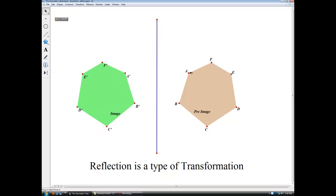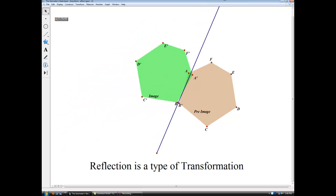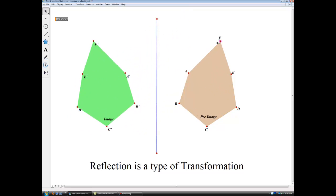The other thing you should notice is what happens to the capital letters that were the points. They get A prime to indicate what used to be A is now A prime in the reflection. And here's something cool with this dynamic software. We can move our line, which adjusts our reflection, and we can also change the appearance of our polygon. No matter what happens to the pre-image, same thing will happen to the image.